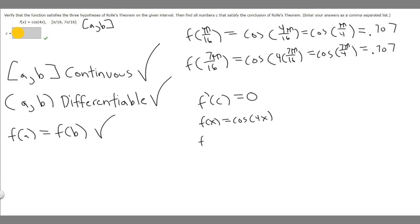So F prime of X, our derivative, is going to equal the derivative of our outside, cosine, which is minus sine, times the derivative of our inside which is 4. So this is going to be minus 4 times the sine of 4X. So what we want to do is set this equal to 0 and solve.